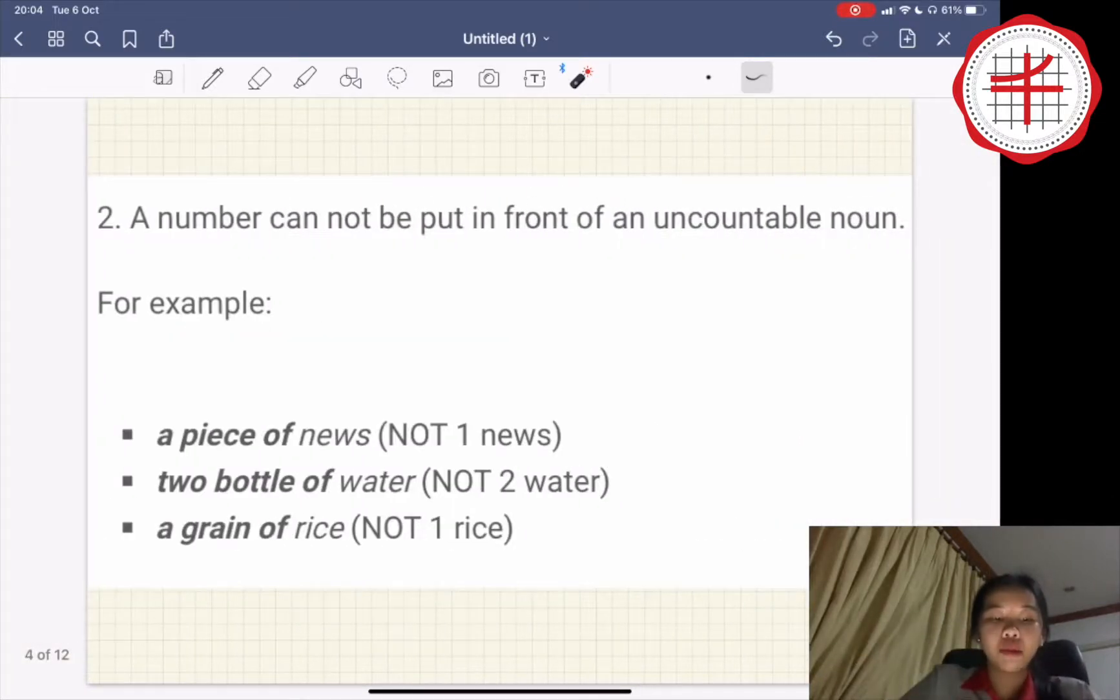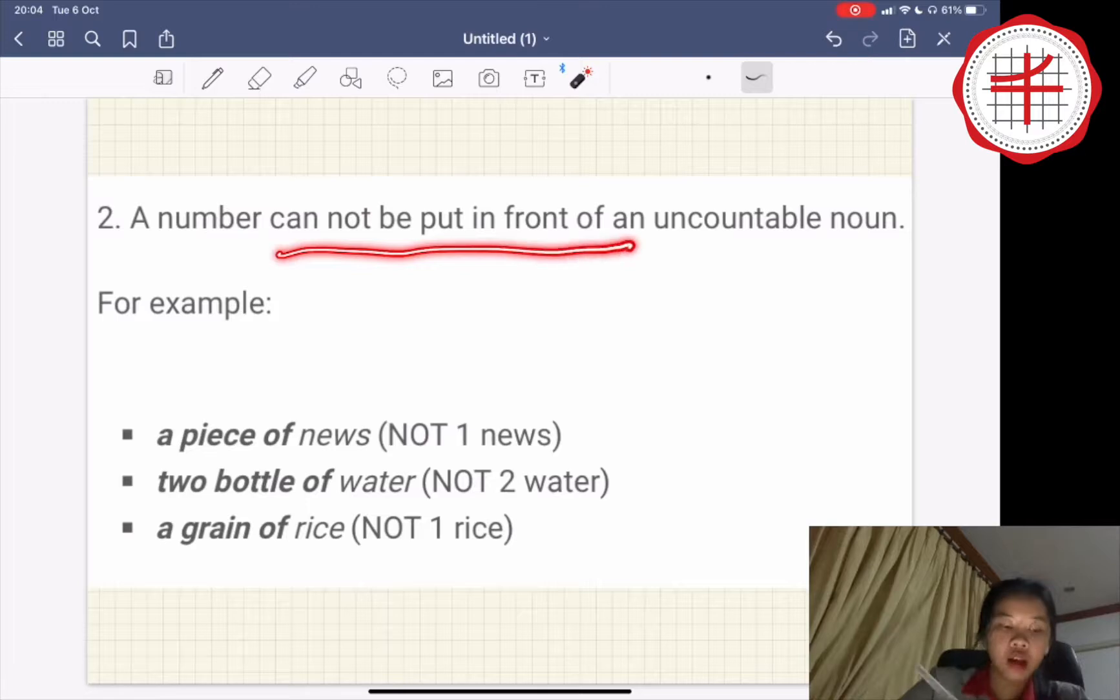Number two, a number cannot be put in front of an uncountable noun. For example, a piece of news, not one news, two bottles of water, not two water, like this.